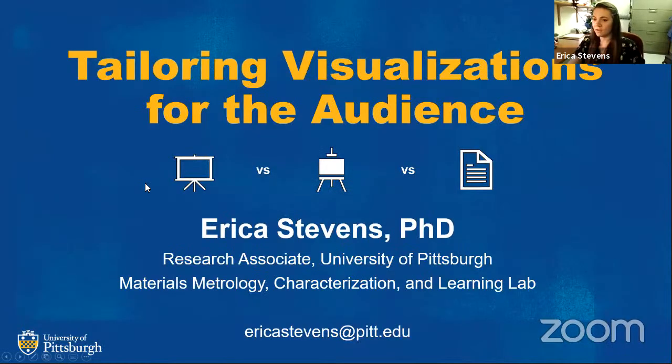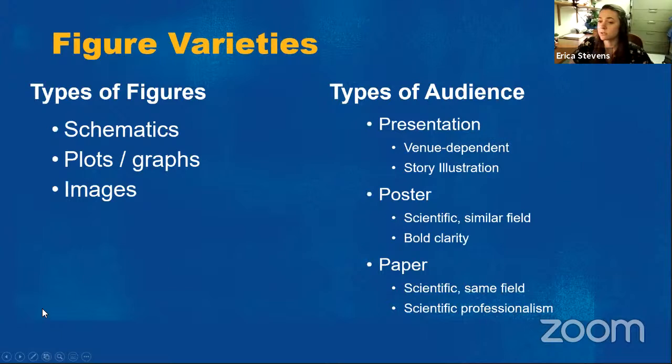All right. Well, I hate to follow Colin because I'm going to take many steps back. I'm going to go over some of the very basic rules and tips that I've learned for presenting to different audiences. So this is going to be for presentations versus posters versus papers. And how you can present the same type of information different ways for each one of those methods. So there's three types of figures that I'm going to go over. That would be schematics, plots or graphs, something for quantitative data, and images. And different types of audiences are, as I said, the presentation poster and paper. And you want to think about who you're talking to, no matter what type of presentation you're giving.